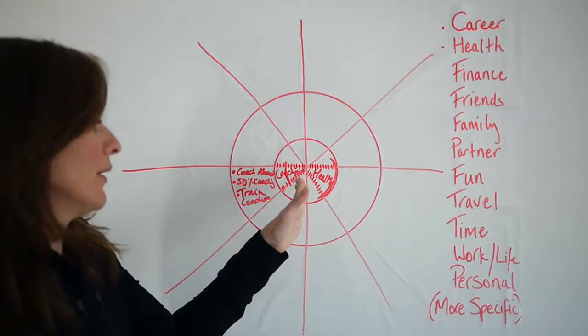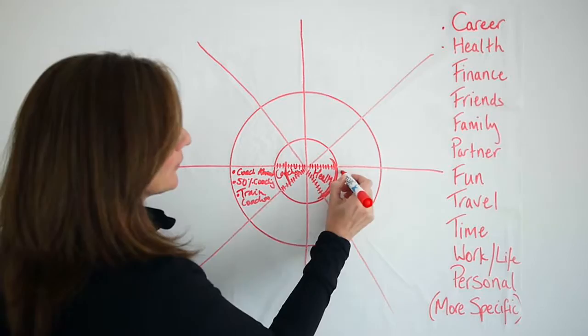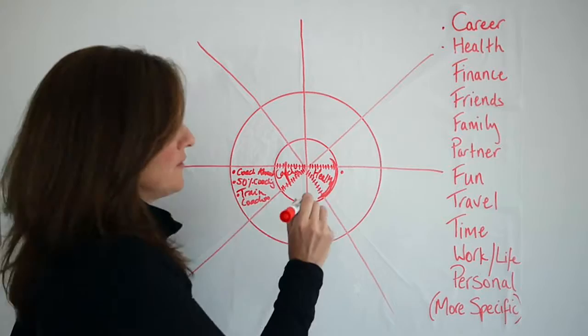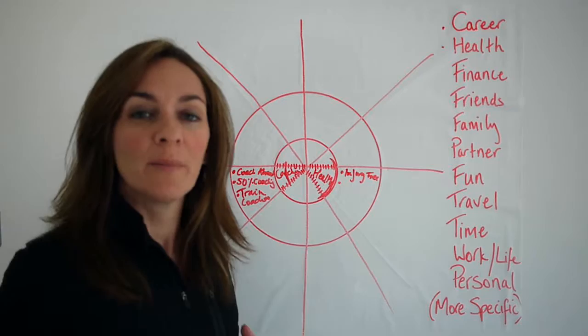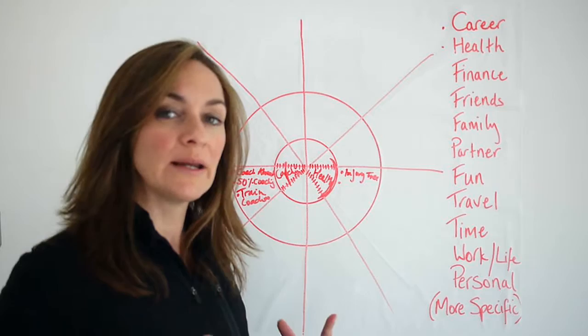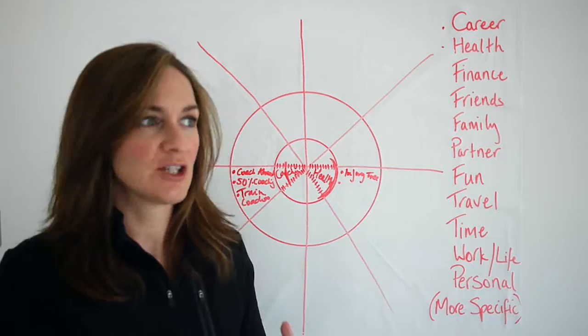So then if I move over to health, I mentioned the injury that I have, so my first goal in this priority area is to be injury free. And then once I'm injury free, the next goal for me, well I really like doing activities that challenge me and specific challenges, like a cycle challenge or an obstacle course challenge.